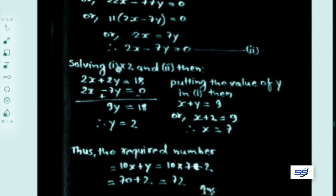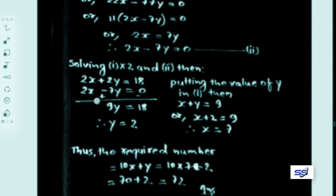Multiplying equation 1 by 2 gives 2x plus 2y equals 18. Subtracting equation 2 (2x minus 7y equals 0) with sign change: 9y equals 18, therefore y equals 2.